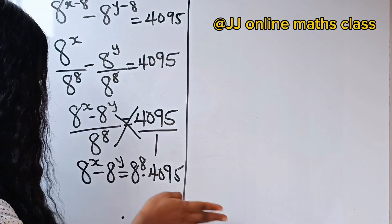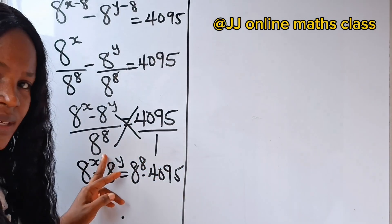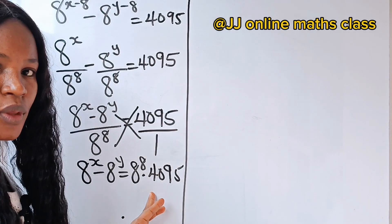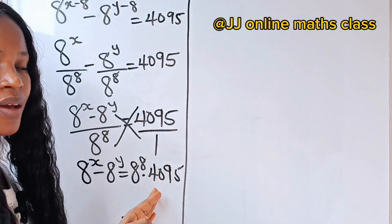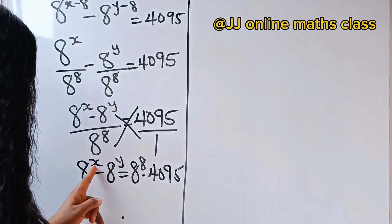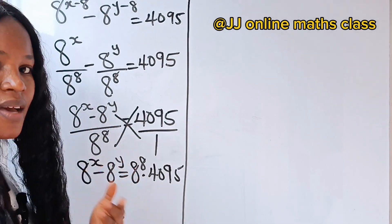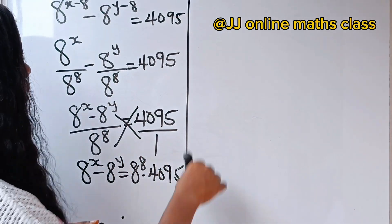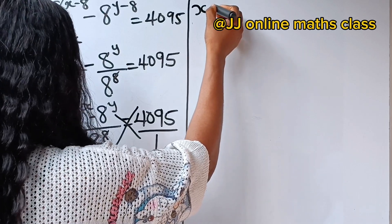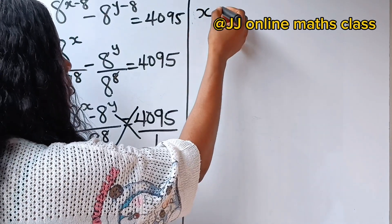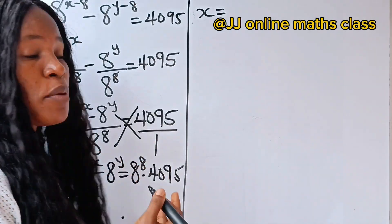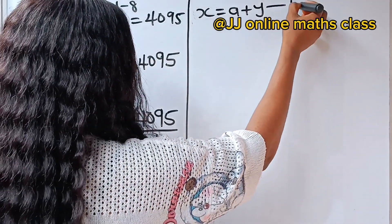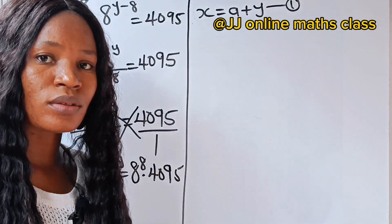When we look at this, if 8 to the power of x minus 8 to the power of y is going to give us a positive number — a number greater than 0 — then logically we can say that x is greater than y. That means we can say x is equal to a plus y. This is a very important equation, so let's call it equation 1.